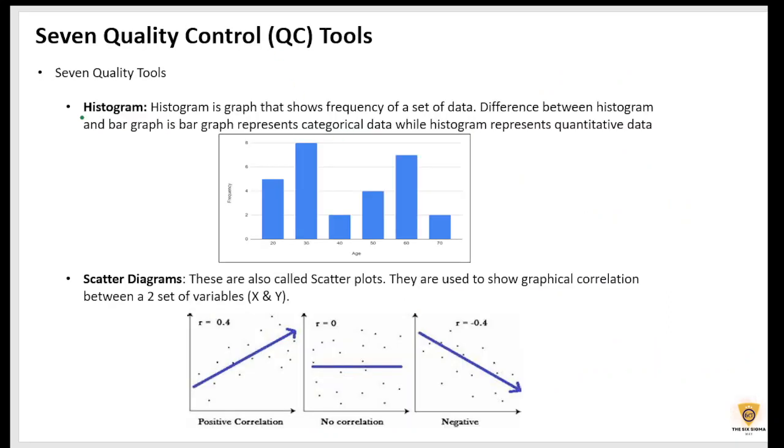The next one is a histogram. Now, what's a histogram? Histogram is a graph that shows frequency of a data, right? If you check, we have age here and the frequency here. So for age 20, this is the frequency. For 30, this is the frequency. And so on and so forth. So this is called a histogram.